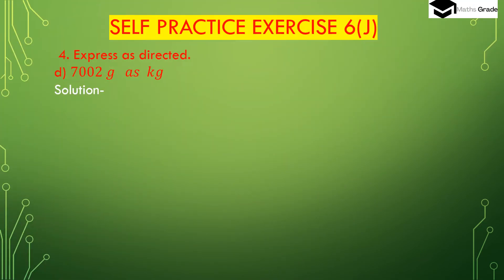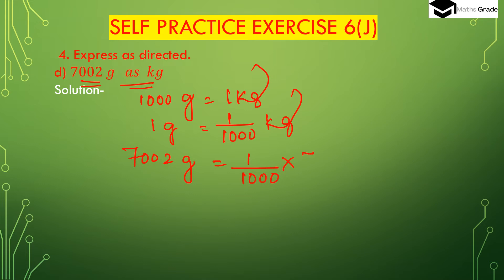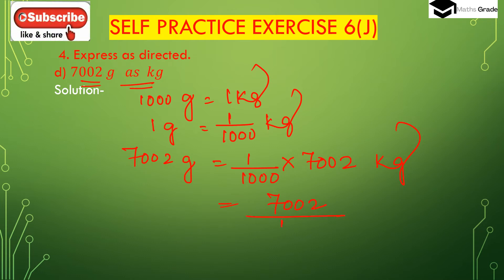Now question d: 7002 grams to kg. We have to convert 7002 grams to kg. We know 1000 grams is 1 kg, so 1 gram will be 1 divided by 1000 of kg. So 7002 grams will be 7002 multiplied by 1 divided by 1000, giving 7002 divided by 1000 kg.